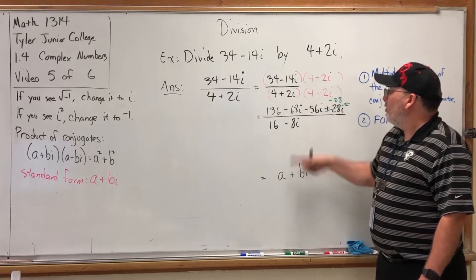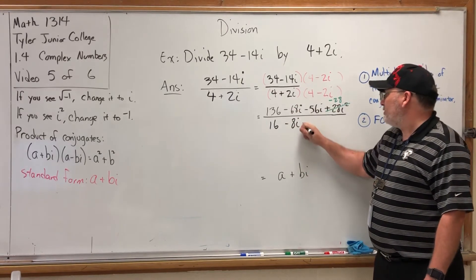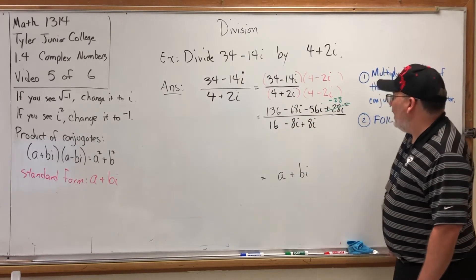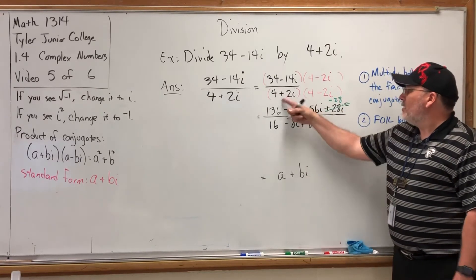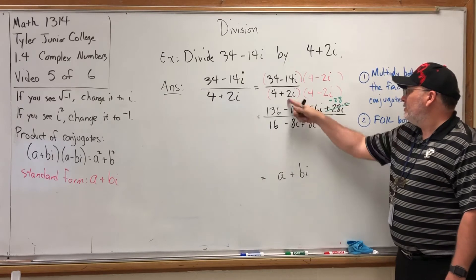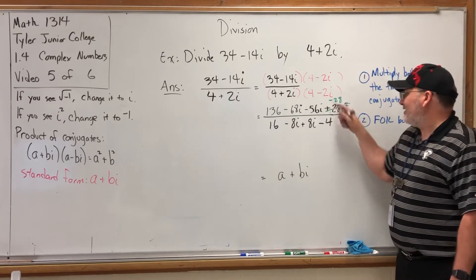For the inner: +2i × 4 is +8i. And for the last: +2i × -2i—positive times negative is negative, 2 × 2 is 4, i × i is i².